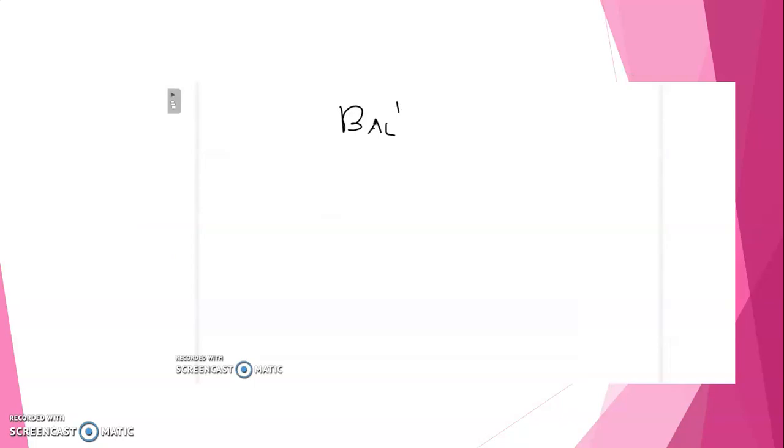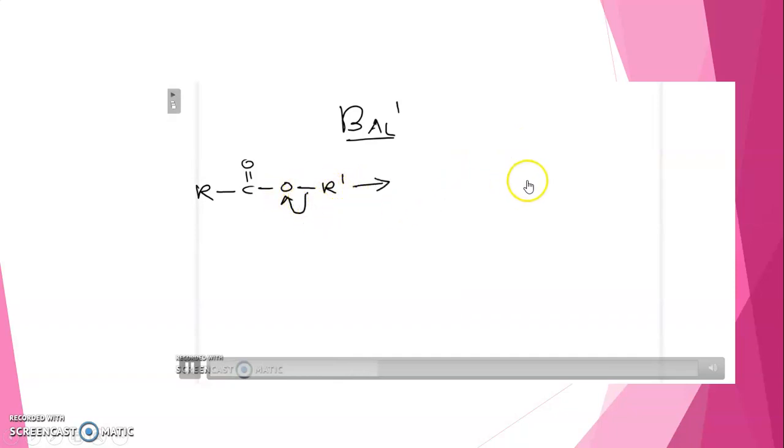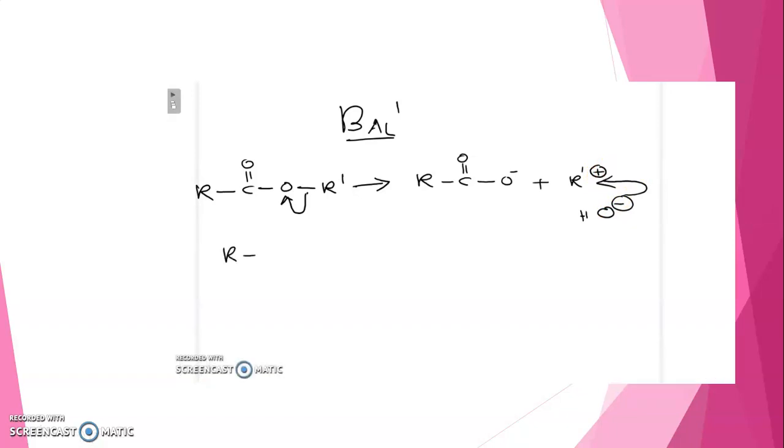Next, the AL-1 type mechanism: Base catalyzed, R-cha cleavage, first order. In this mechanism, the first step is the alpha cleavage to produce a carbonium ion and a carboxylate. And the next step, this carbonium ion is attacked by hydroxide ion to form an alcohol molecule. Here this is the slower step and it is a first order reaction.